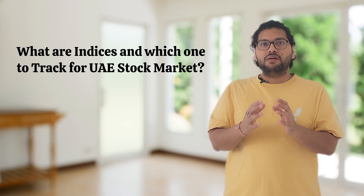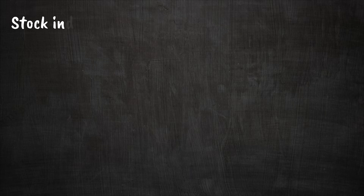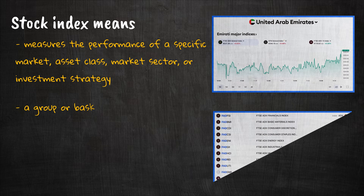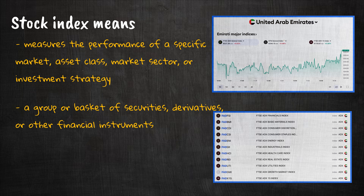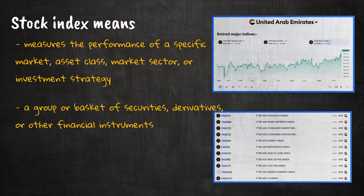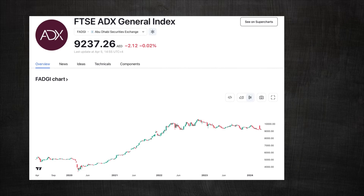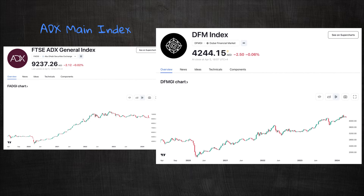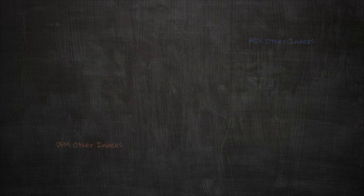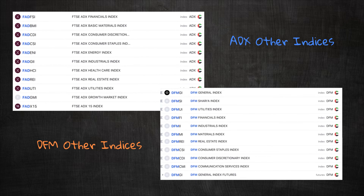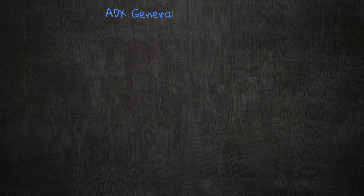Now let's move on to the next question: what are indices and which ones to track for ADX and DFM? To track the performance of companies listed on ADX and DFM, these exchanges use various indices which include companies from different sectors like healthcare, finance, real estate, consumer goods, and energy. Abu Dhabi mainly has FADGI — the Abu Dhabi General Index — and DFM mainly has DFMGI — the Dubai Financial Market General Index. There are also sector-specific indices for healthcare, finance, real estate, and energy, which we will discuss in a separate video.